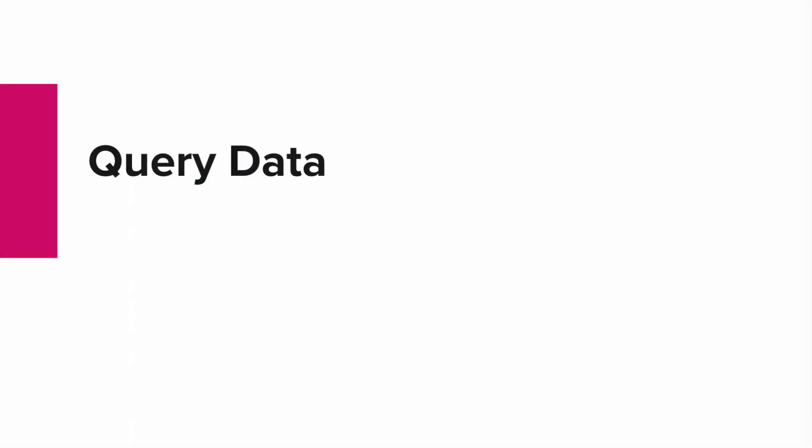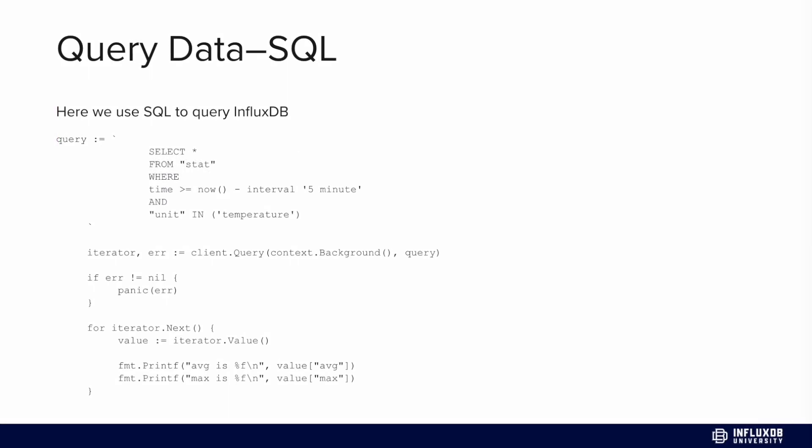So now let's talk about querying data with the Go Client Library, specifically with SQL. In this instance, we will generate a SQL query to query InfluxDB. If we are querying the data that we've been writing, we'll say SELECT * FROM stat WHERE time is now minus an interval of five minutes, and also specify what tag or column we want to grab — unit and temperature. The only thing that's a little different about this implementation of SQL is that when you specify time intervals, you have to explicitly say now minus interval five minutes. And then we can iterate over that result and print our max value and our average value.